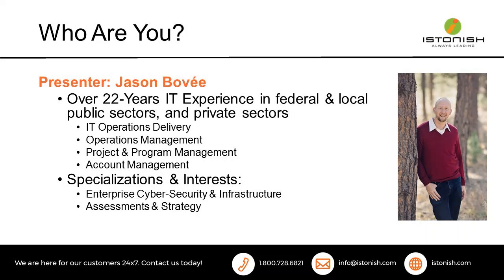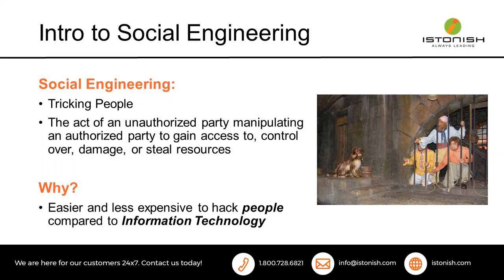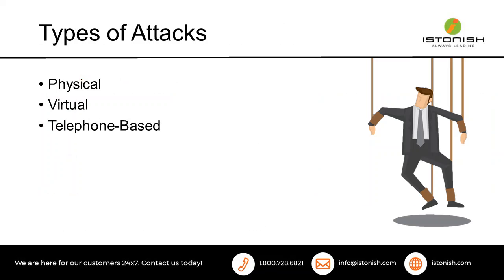Social engineering, in short, is basically tricking people. It is the act of an unauthorized party manipulating an authorized party to gain access, control, damage, or steal resources. Why do people do it? Technology is getting better and better, but people still have the same faults — we inherently want to trust, we have emotional responses. It's a lot easier and less expensive to hack people than information technology. There are basically three types of attacks: physical, virtual, and telephone-based.